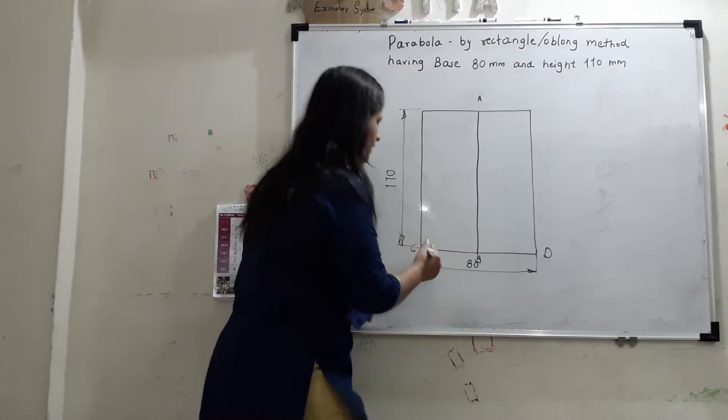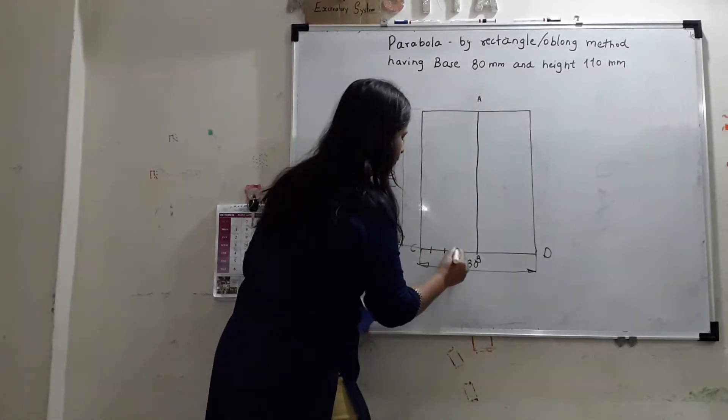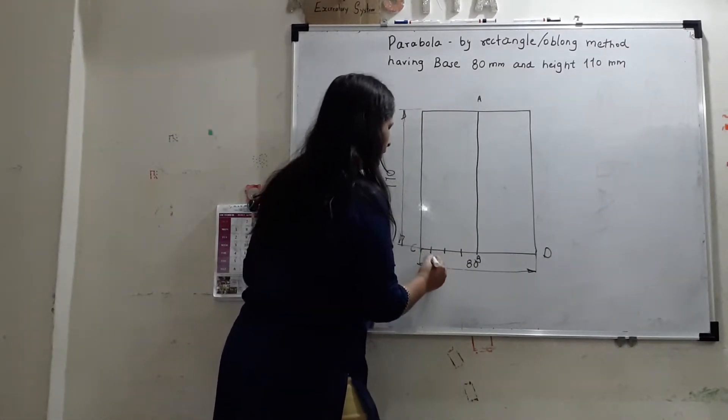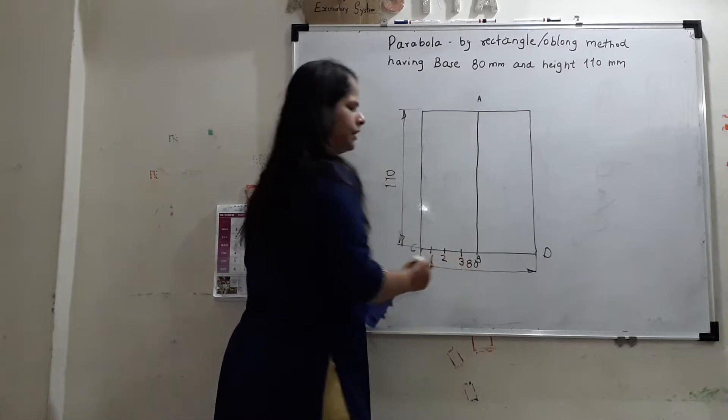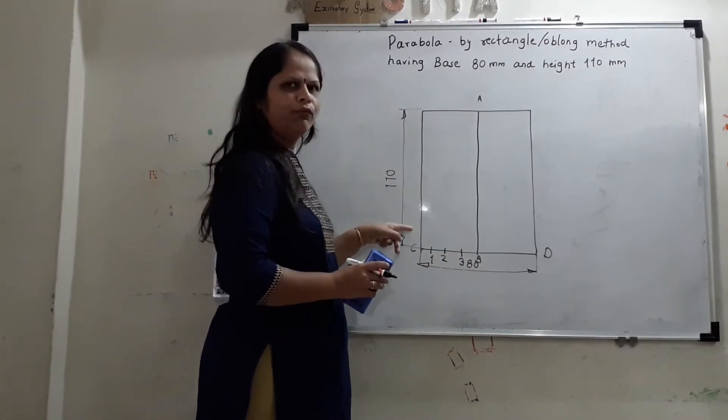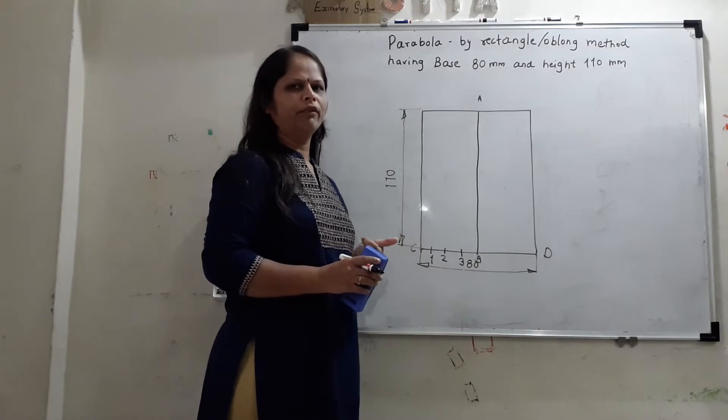We will divide it in equal 4 parts. So, 1, 2, 3 and 4. So, we will write 1 here, 1, 2 and 3. Similarly, we will divide this segment in equal 4 parts. 110 into 4 equal parts.